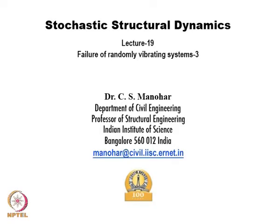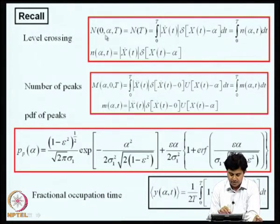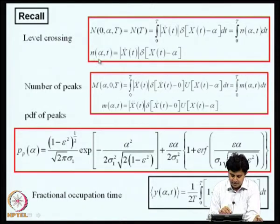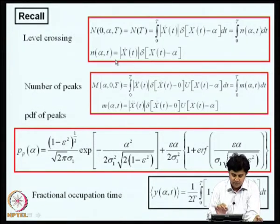We have been discussing the development of certain descriptors of random processes which help us to model failures of randomly vibrating systems. In this lecture, we will be discussing more on envelope and phase processes associated with a given random process. We have solved the problem of characterizing the number of times the level alpha is crossed in 0 to t by a random process X(t). This counter, n(alpha, t), gives a rate of crossing of level alpha, and when X(t) is a Gaussian random process, we have been able to characterize some of the lower order moments of these rates.